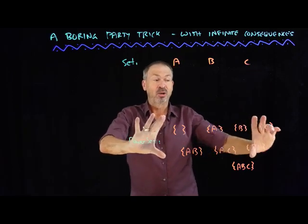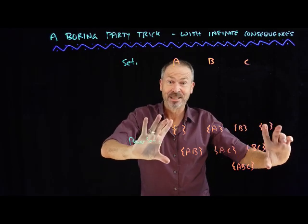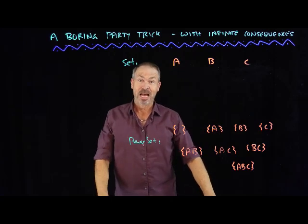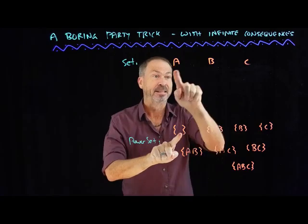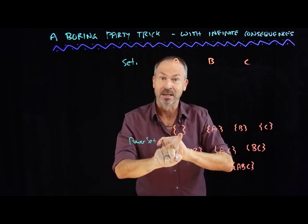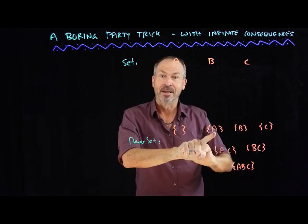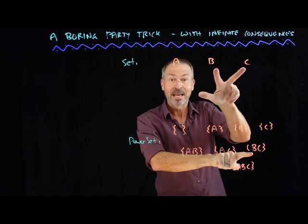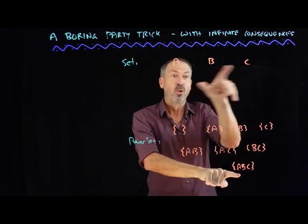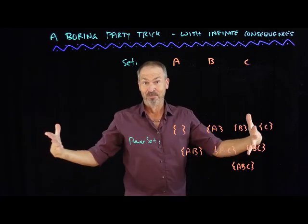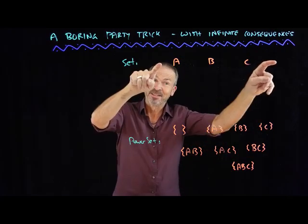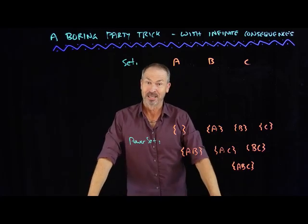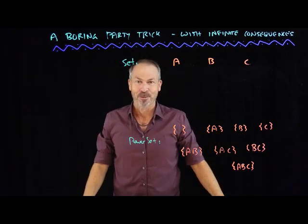And at the bottom of the page, list all the possible sets you can make out of the letters you wrote at the top. For example, you might want the set that has none of the letters in it — the empty set — and the set with just A, just B, just B and C, all three letters, and so on. If you do a lot of letters at the top, you'll be here for a very long time listing all the possible subsets, so keep the letters at the top pretty small.